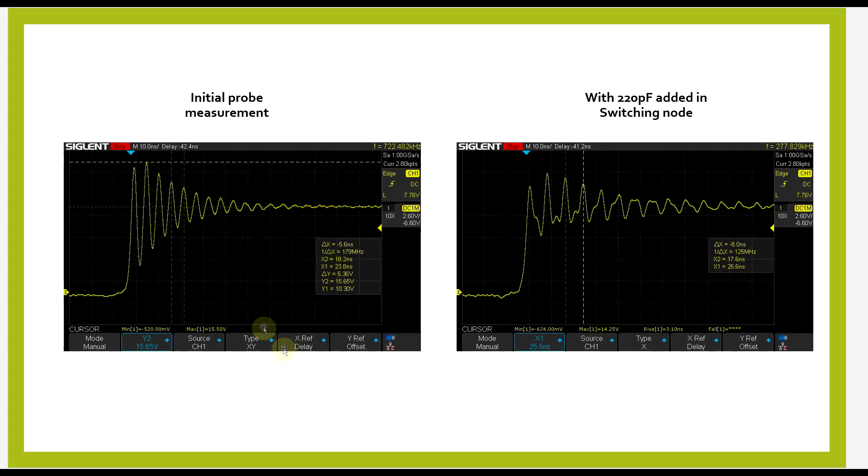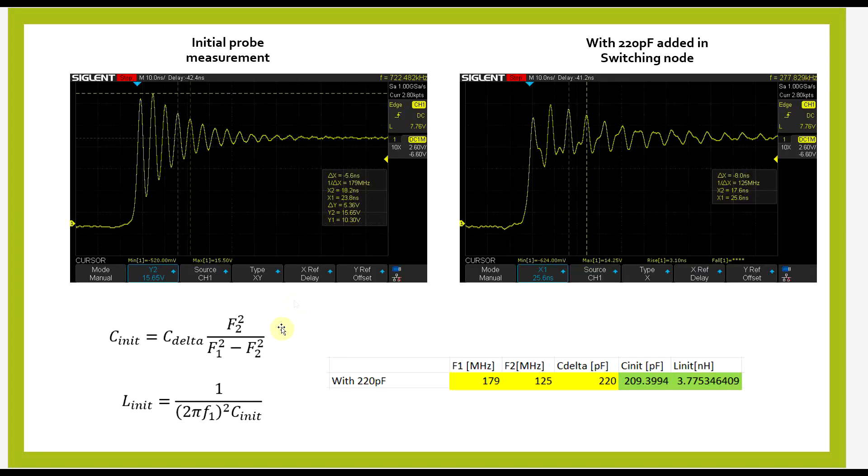So a direct measurement with an oscilloscope probe will add some non-negligible amounts of capacitance. This needs to be considered separately from the extra physical capacitor that you add into the circuit. So I already went ahead and measured the resonance as is, so our initial measurement, and then measured the ringing with a 220 pF capacitor added from the switching node to ground. When measured with the oscilloscope probe, we had 179 MHz to begin with, and we went down to 125 MHz with the added capacitor.